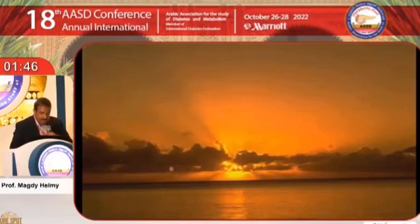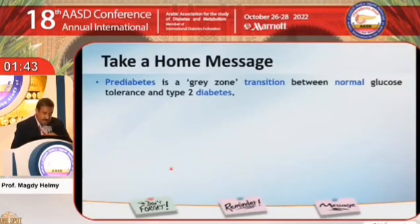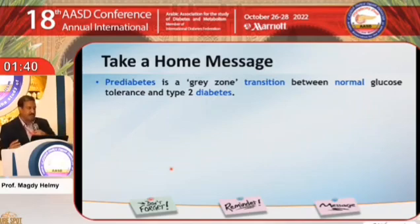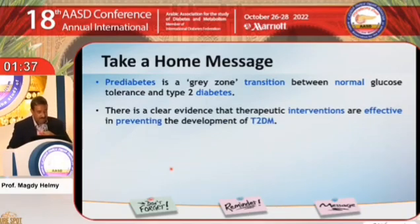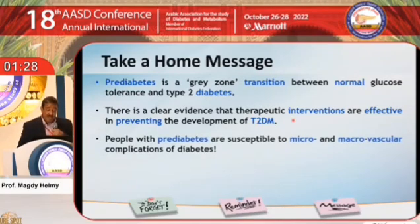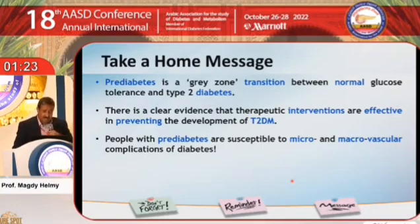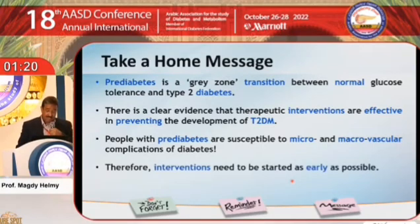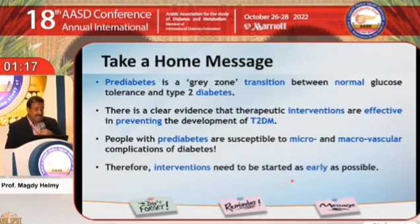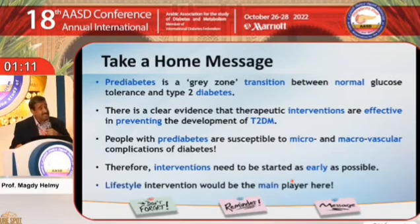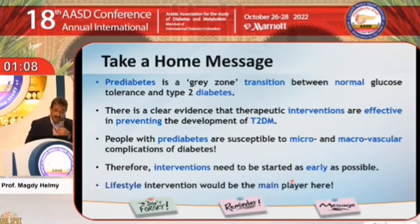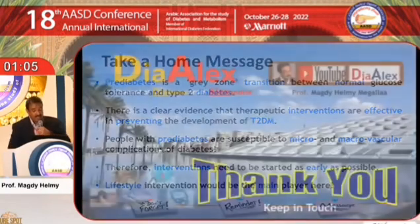To conclude, pre-diabetes is a gray-zone transition between normal glucose tolerance and type 2 diabetes. Yet, we have effective interventions available at this stage. Pre-diabetes is not an innocent condition — it can be associated with both microvascular and macrovascular complications, so interventions need to be started as early as possible. Bottom line: lifestyle intervention remains the main player here. Thank you very much.